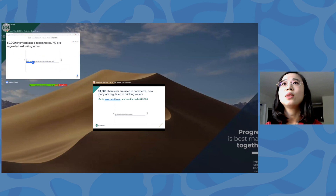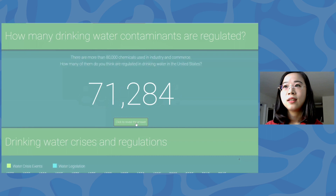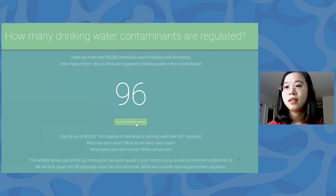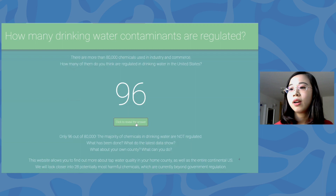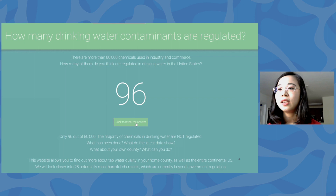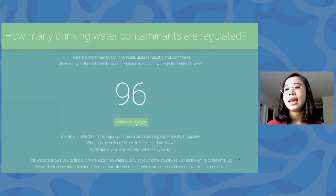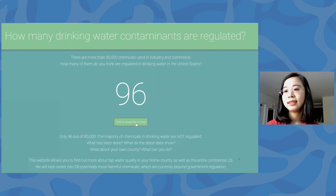So what is the correct answer? As you can see, the majority of chemicals are not regulated — only 96 out of 80,000 chemicals are regulated. I'll introduce a little bit about the governing law in the U.S. for safe drinking water, called the Safe Drinking Water Act. In 1974, the initial 30 chemicals were regulated. In 1992, an additional 66 were added. We haven't added any new chemicals since then, and that is more than 20 years ago.